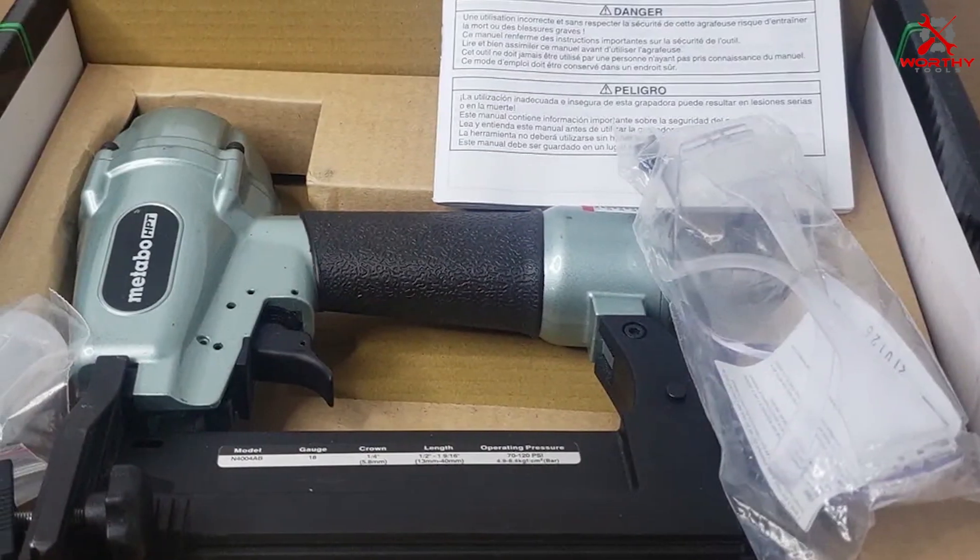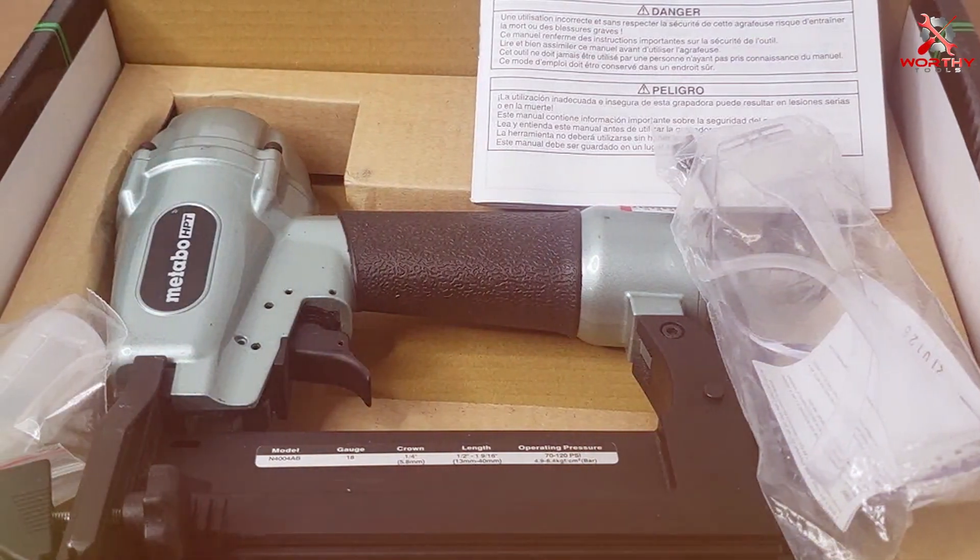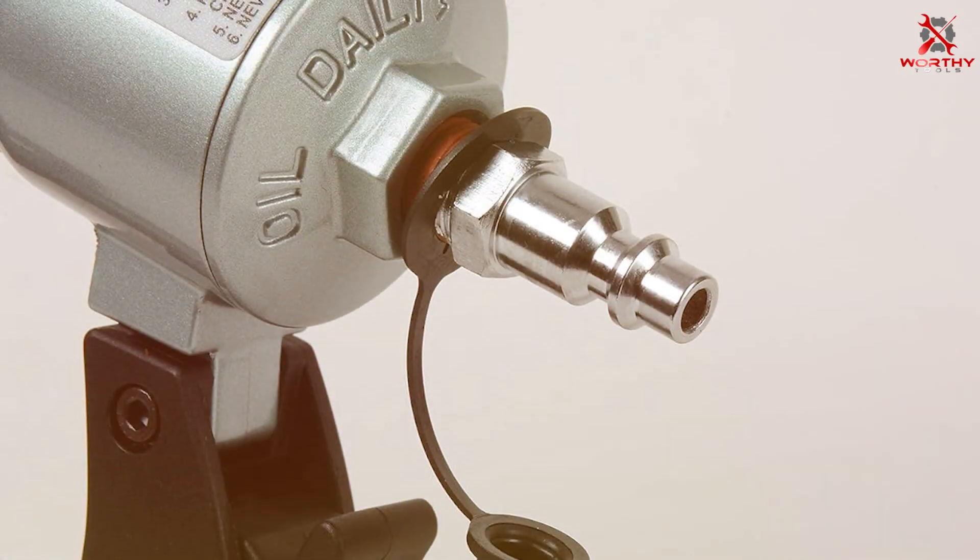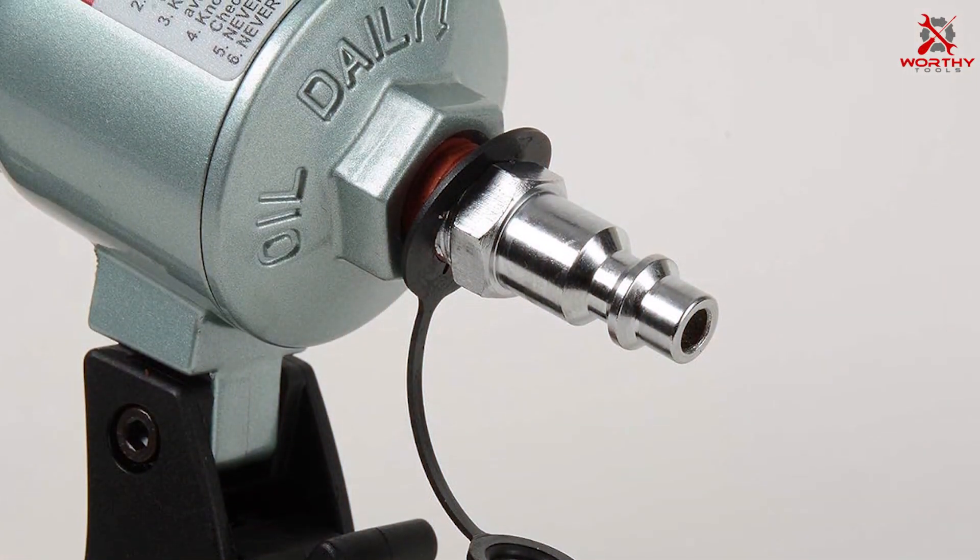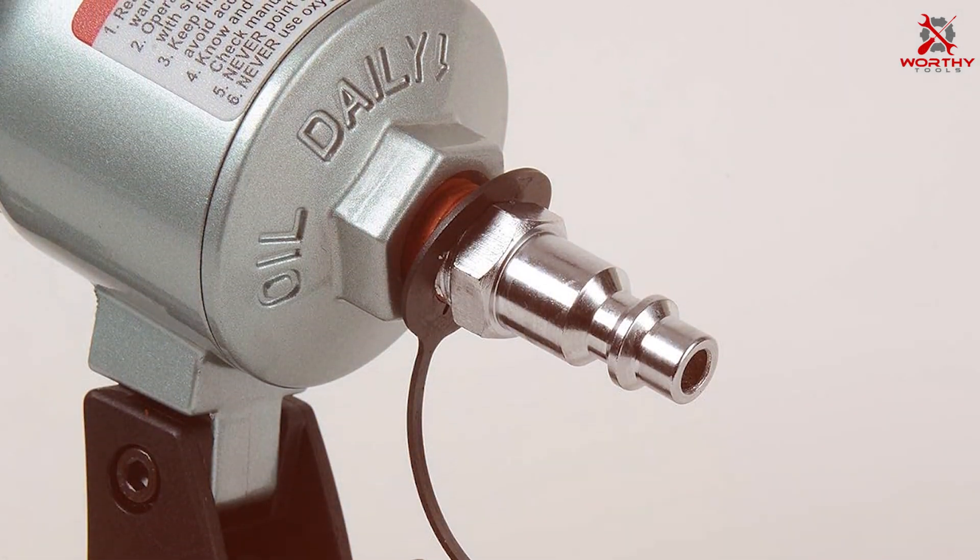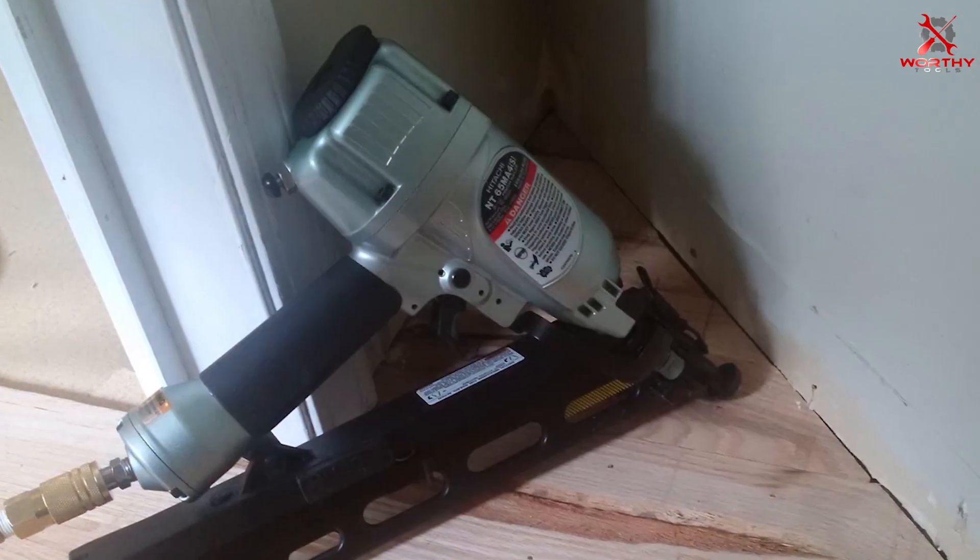The N4004AB stands out for its precision in stapling, making it ideal for delicate flooring materials where accuracy is paramount. The tool's compatibility with various staple sizes enhances its versatility, allowing it to be used for a range of flooring thicknesses. Its easy-to-load magazine simplifies the stapling process, reducing downtime and increasing efficiency.